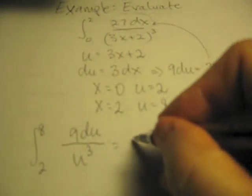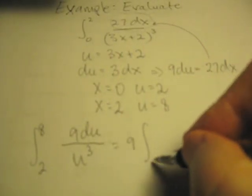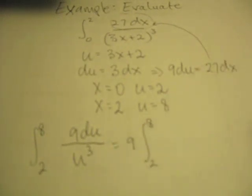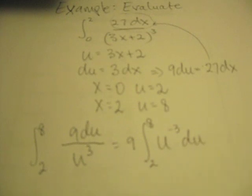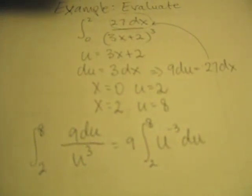And so this would become, if I simplify this out, I'd pull a 9 out and my terminals are here, and I'd change this to a negative exponent. Then this is now my integral that I have to find.